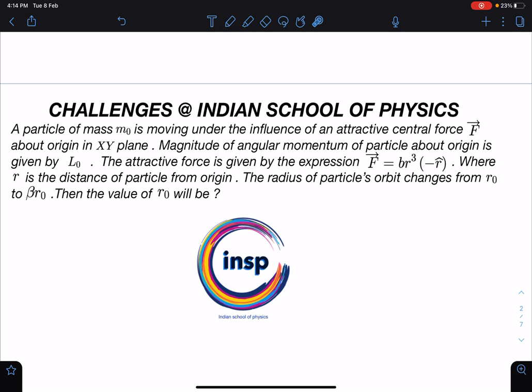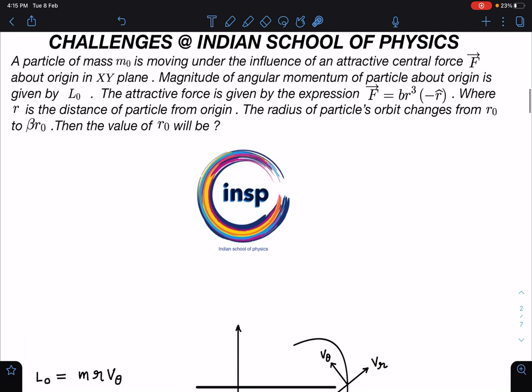A particle of mass M₀ is moving under the influence of an attractive central force F about the origin in XY plane. The magnitude of angular momentum of particle about origin is given by L₀ and the attractive force is given by the expression vector F equals BR^Q minus R cap, where R is the distance of particle from the origin. The radius of the particle's orbit changes from R₀ to βR₀, then the value of R₀ will be.